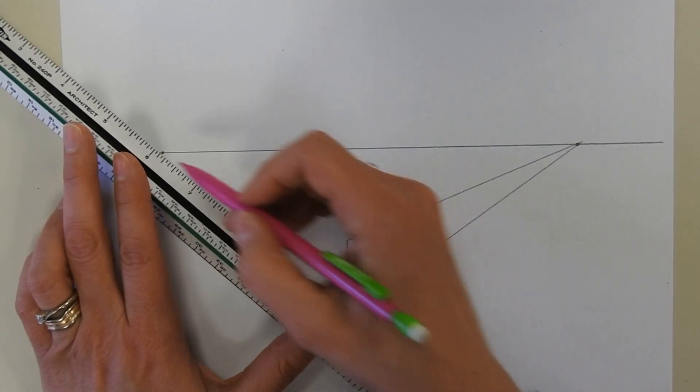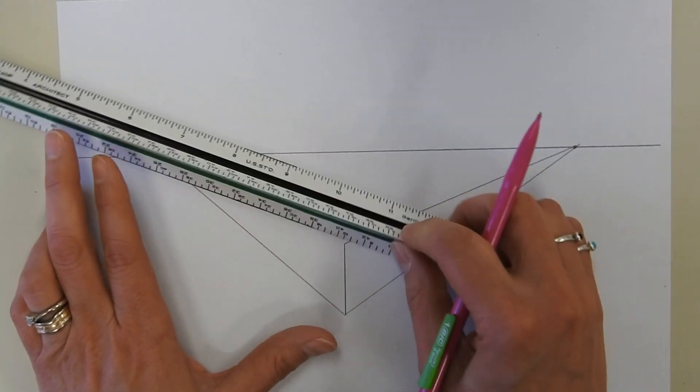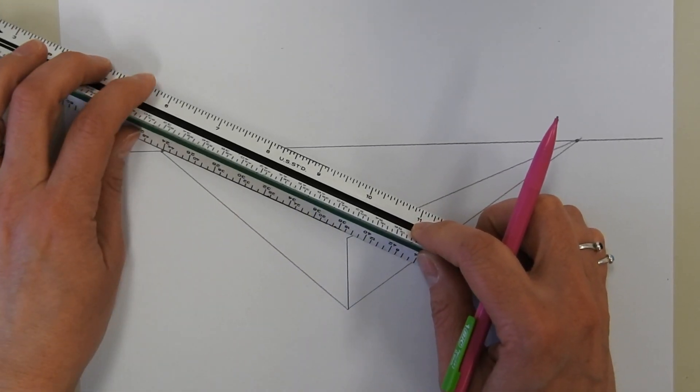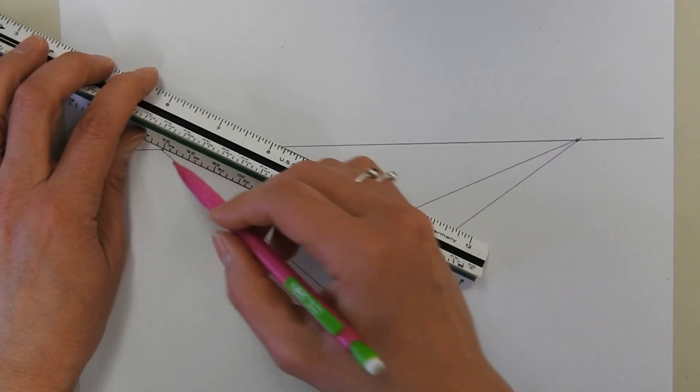This one here is below the horizon line, so when we finish drawing it you can see the top of the cube.